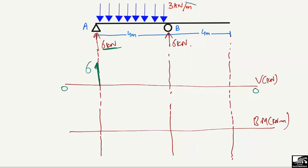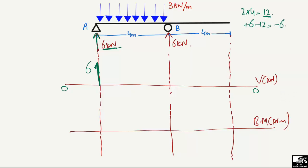The uniformly distributed load of 3 kilonewton per meter over 4 meters gives a total downward load of 12 kilonewtons. Starting from +6, the shear force decreases linearly due to this downward UDL, reaching 6 minus 12 = minus 6 kilonewtons at point B. At B, RB = 6 kilonewtons acts upward, bringing the shear force from minus 6 back to zero. Beyond B on the overhanging part, there is no load, so the shear force remains zero.